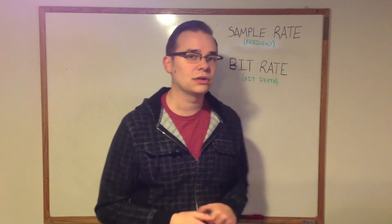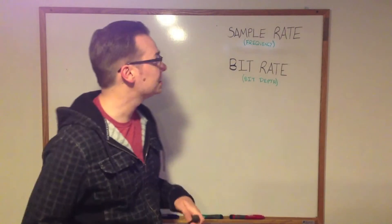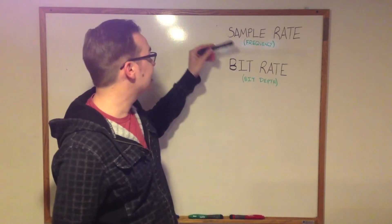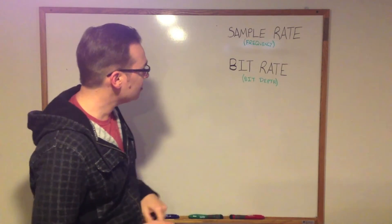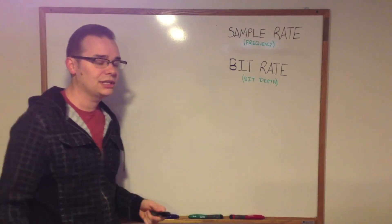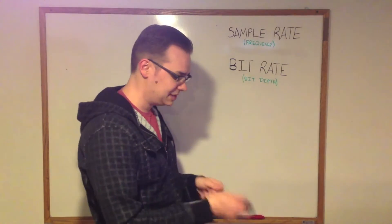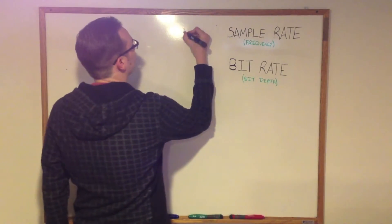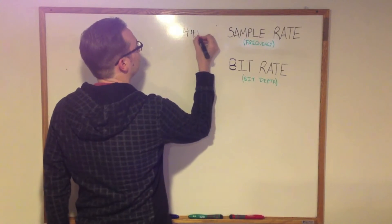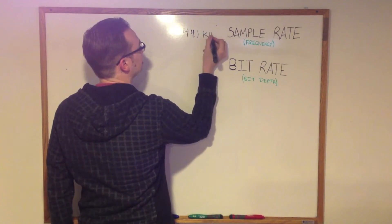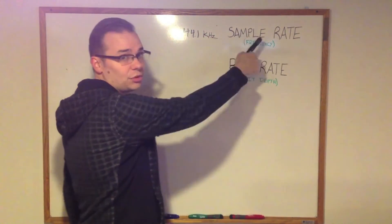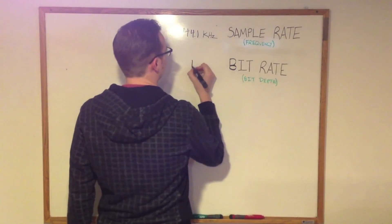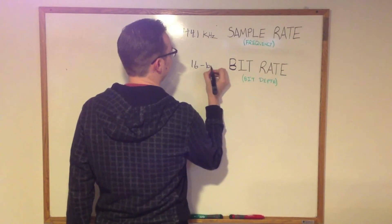When we're dealing with digital audio, there are two terms that we concern ourselves with: sample rate and bit rate. If we think in terms of CD audio, you may have seen these numbers before — that's 44.1 kilohertz, that's the sample rate of a CD. For bit rate, you might have seen 16-bit.